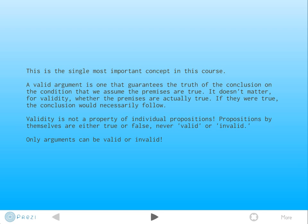We guarantee the truth of the conclusion on the condition that we assume the premises are true. It doesn't actually matter whether the premises are actually true. All that matters is that if they were true, the conclusion would necessarily follow. Remember that validity is not a property of individual propositions. Propositions by themselves are either true or false, but they're never valid or invalid. Only arguments, collections of propositions, can be valid or invalid.